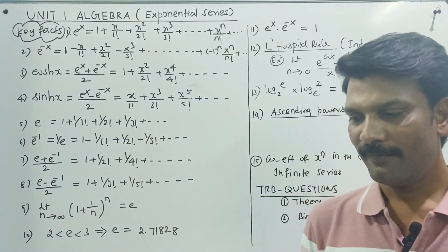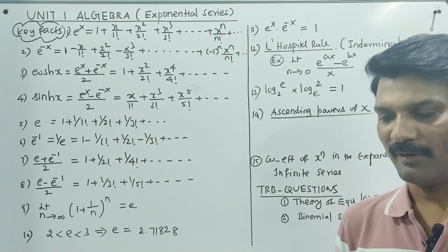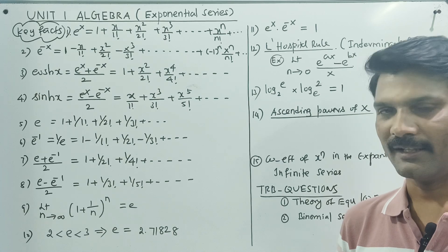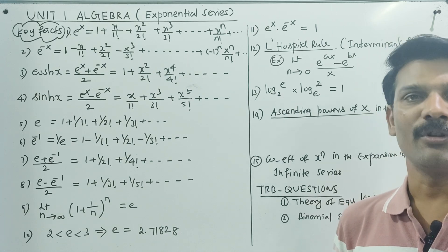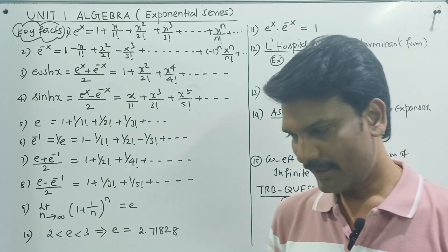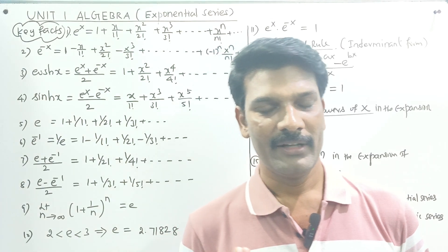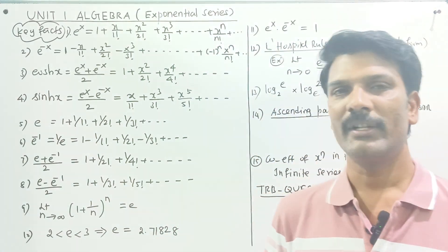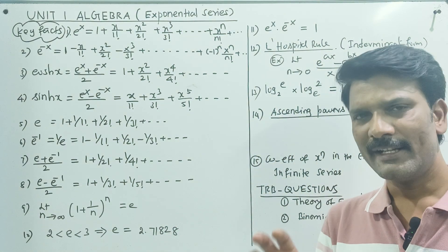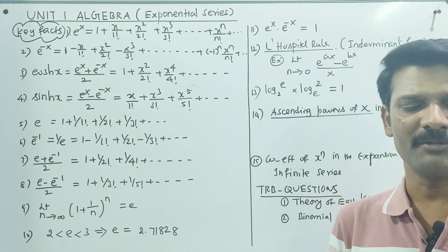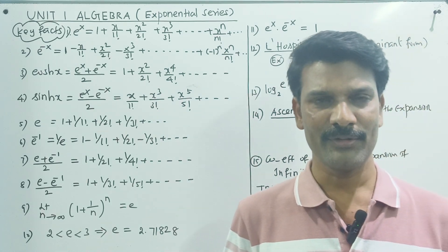In theory of equations, we will add a little content. There is a method called the Corner Method, the Garden Method, the Reciprocal Equation, the Irrational Roots, and the Complex Roots. There is a method called the Theory of Equation and the Theory of Numbers.